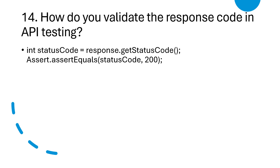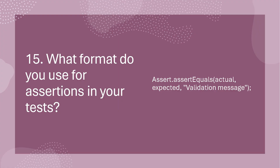How do you validate the response code in API testing? You need to write the assertion code to assert the response. What format do you use for assertions in your tests? You can use: `assert.assertEquals(actual, expected, "validation message")` — providing the actual value, expected value, and a validation message.